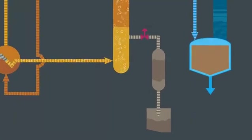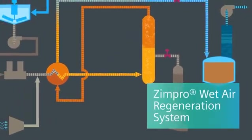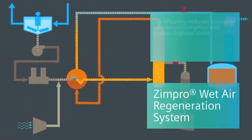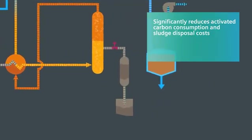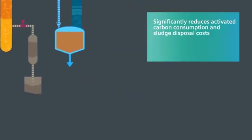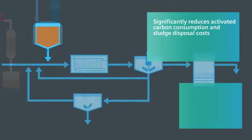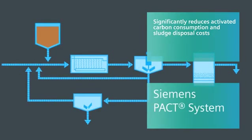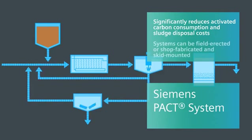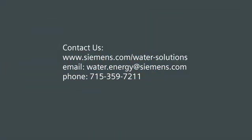The Zimpro Wet Air Regeneration System by Siemens significantly reduces activated carbon consumption and sludge disposal costs, and can be self-sustaining, requiring no auxiliary fuel. Systems can be field-directed or shop-fabricated and skid-mounted. Contact us today for more information.